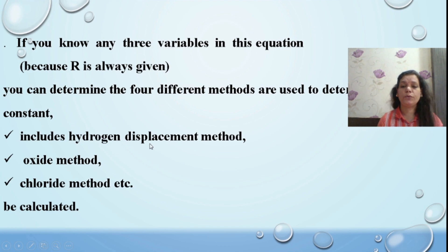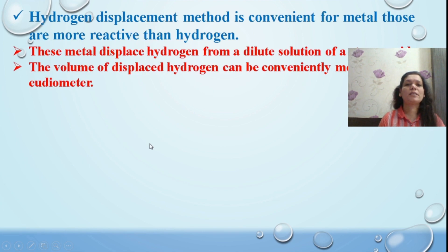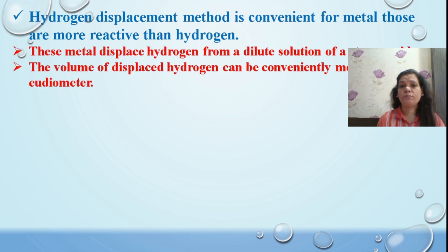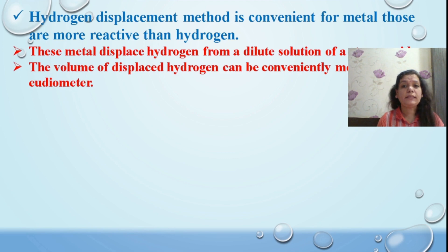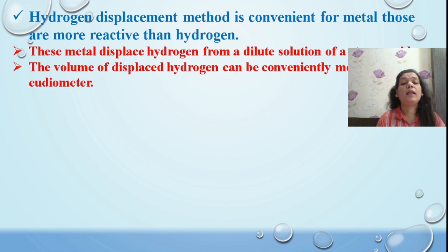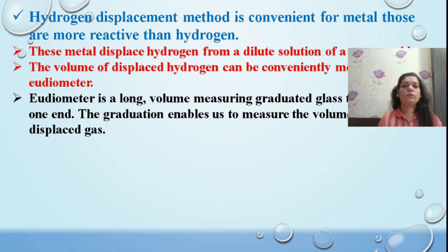The hydrogen displacement method is convenient because metals more reactive than hydrogen can displace hydrogen from a dilute solution of a strong acid. We take a little amount of concentrated acid along with distilled water to make a dilute solution. When a metal is placed in contact with the acid, it reacts to form a metal salt — for example, metal chloride with HCl, or metal sulfate with H₂SO₄ — along with the release of hydrogen gas.